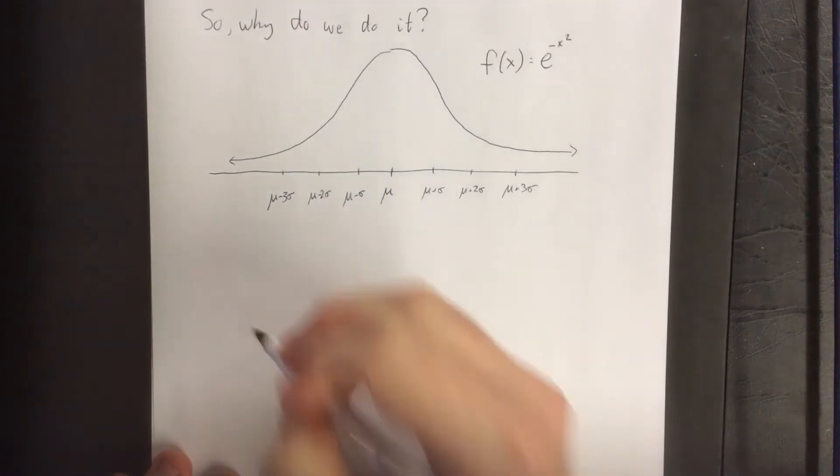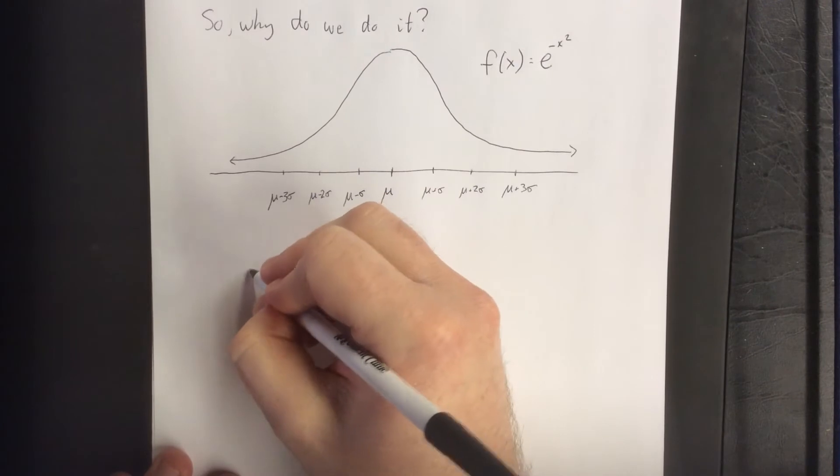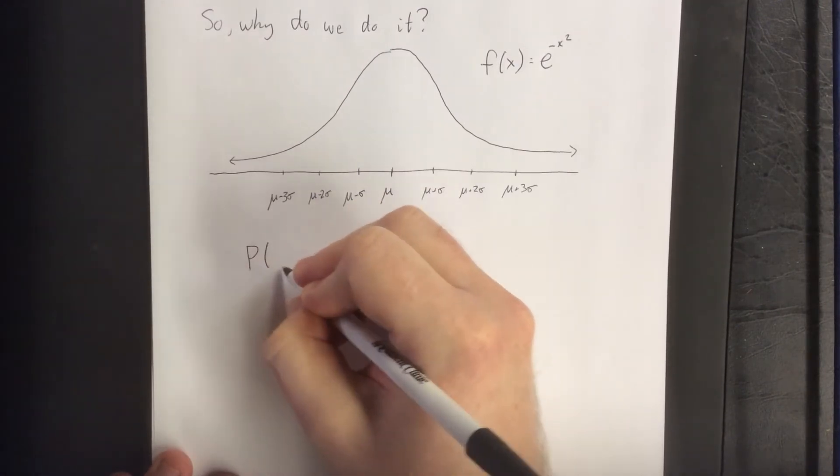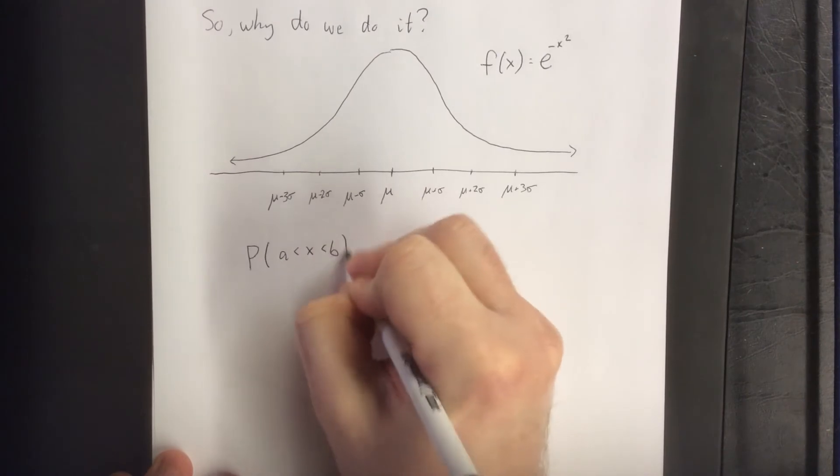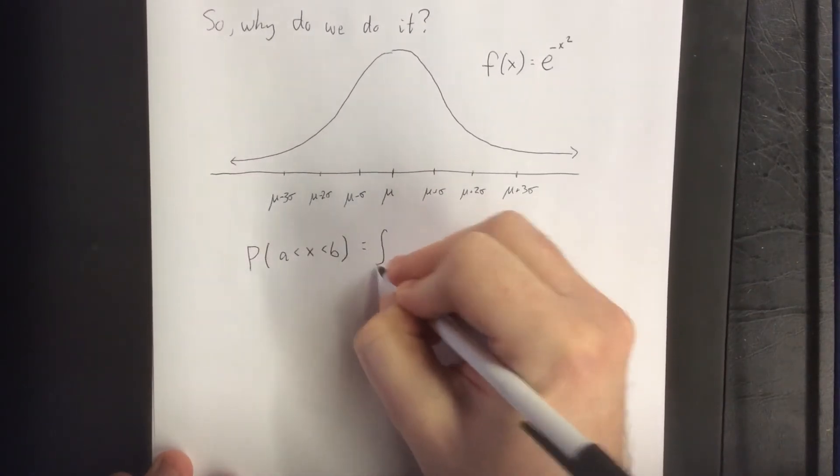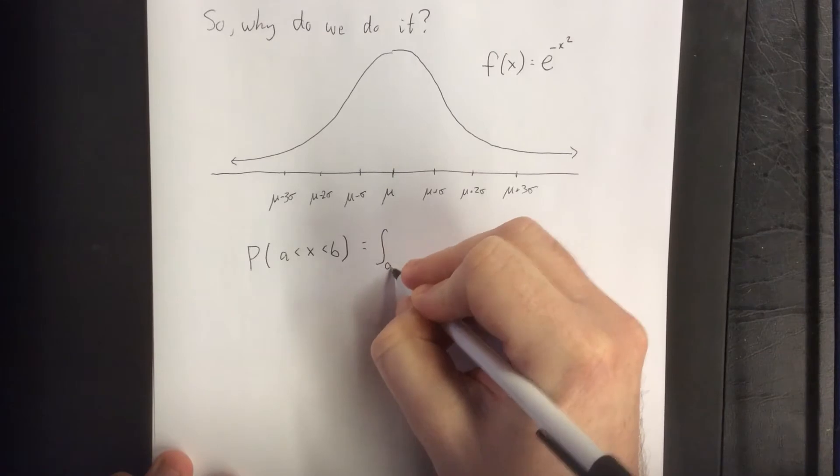Now associated with that would be certain amounts of area. So the probability of a variable being between two values along here is going to be equal to the area associated with it.